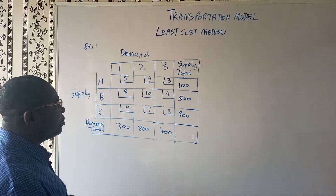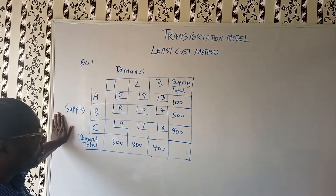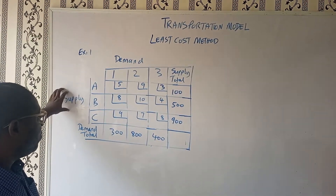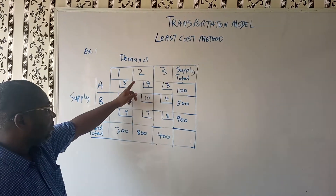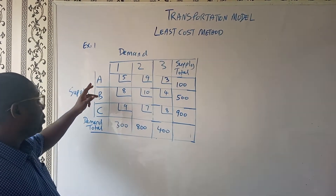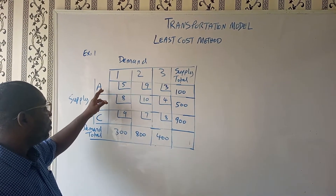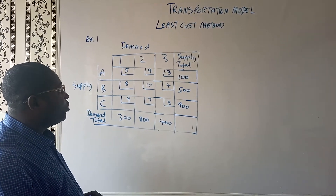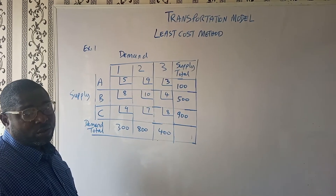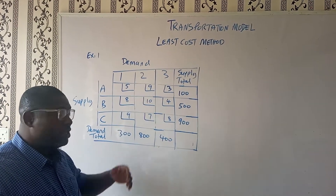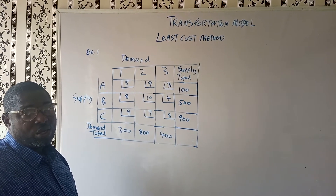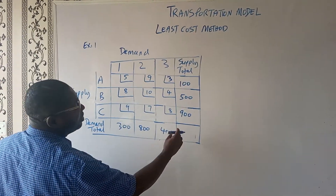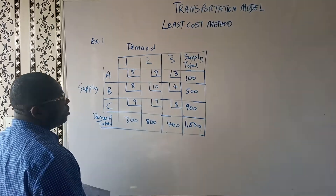What we have here, as you can see on the board, is the least cost method. In this method, we're already given our demands on the columns and the supply in the row section. These values here are the unit costs for transporting from point A to center 1, point A to center 2, or point A to center 3. We're going to compare this with our earlier video on the north-west corner method example 1. Let me fill this up — this will be 1,500. Please look at the board.